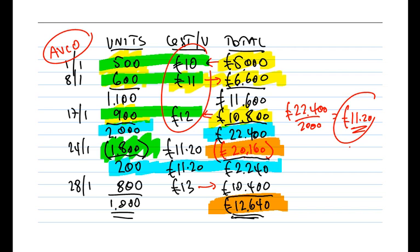We've now come up with our two figures for each of FIFO, LIFO, and AVCO. Hopefully you've followed the process. It's useful in your assessments to set up little workings on a sheet of paper so you can work through it mechanically. Feel free to drop me an email if you've got any questions. Maybe I'll see you next time.